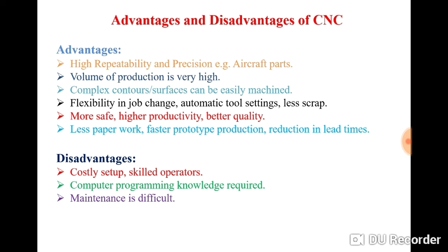The very first advantage is high repeatability and precision. The CNC machine has very high repeatability because for machining any component you first have to write a manual part program, and in that part program you mention the speed, feed, and depth of cut. Everything is defined before machining and the machine follows those parameters, whereas in a conventional machine the worker operates it and the speed, feed, and depth of cut may change. So with a conventional machine there is very little chance of getting a precise component with higher repeatability, whereas with a CNC machine everything is defined in the part program, giving you higher repeatability and high accuracy.